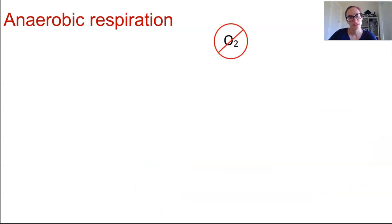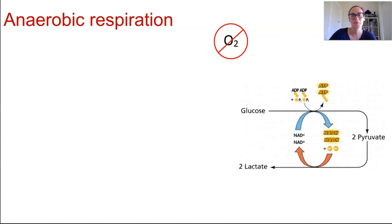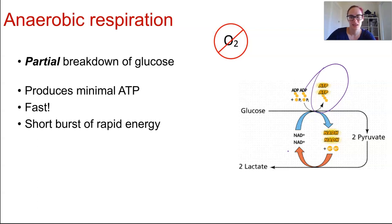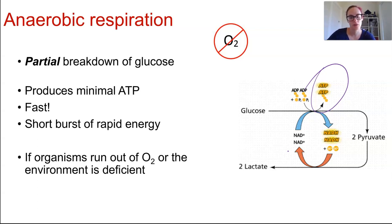Anaerobic respiration, however, is only going to occur with no presence of oxygen there. And it's only a partial breakdown of glucose. The oxygen is not there to finish the entire process, so it's only going to produce minimal ATP, we're talking two ATP molecules. However, it is super fast, and it can give you a short burst of rapid energy if it's required. So it's usually only occurring where oxygen is deficient in the environment.